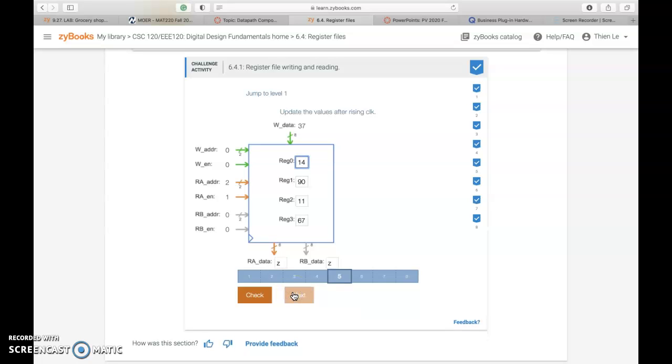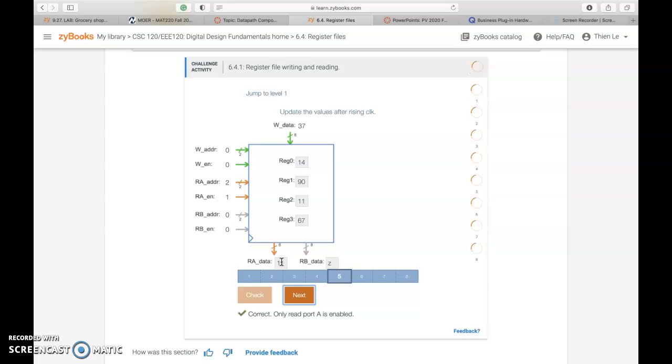For the fifth one, looking at this side we see that we're not using the W or the RB because the enable is 0, so we just let it be. For the RA N we're enabled, we're looking at register 2, which that will be 11. So we just put it in, easy.